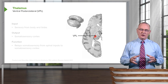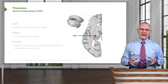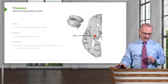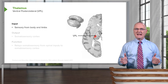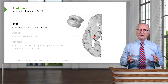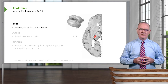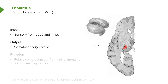We also have the ventral posterolateral nucleus of the thalamus, or VPL, highlighted here. Its input is going to be sensory from the body and the limbs. It processes a lot of information coming into the thalamus and outputs it to the somatosensory cortex, so we can perceive various sensations — touch, pressure, and vibration, for example. It relays somatosensory spinal inputs up to the somatosensory cortex so that we can perceive those various senses.